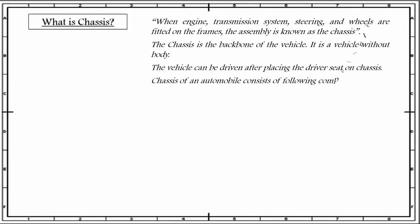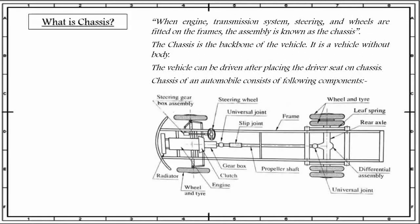Chassis of an automobile consists of the following components: first, engine; second, wheels; radiator; transmission system consisting of clutch, gearbox, universal joint, propeller shaft, differential and rear axle. Then suspension system is also a part of chassis. Then steering system is a part of chassis, along with brakes and fuel tank. These all components constitute one chassis of an automobile.